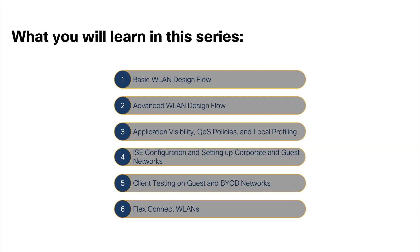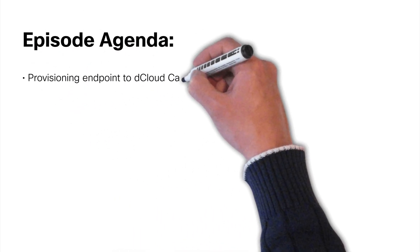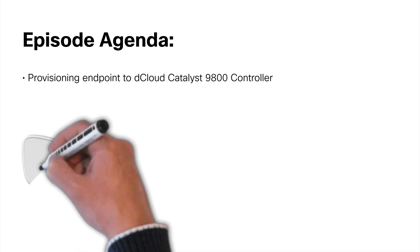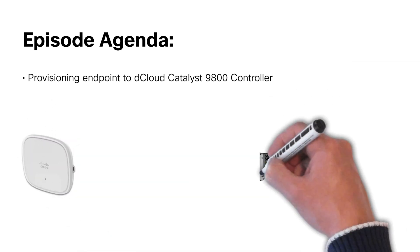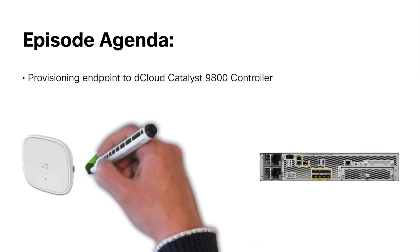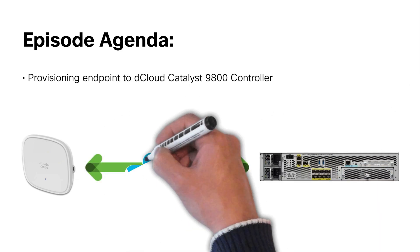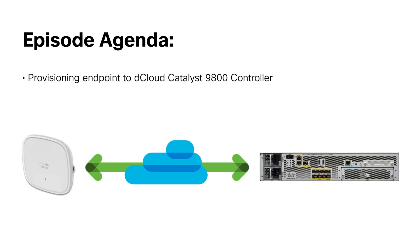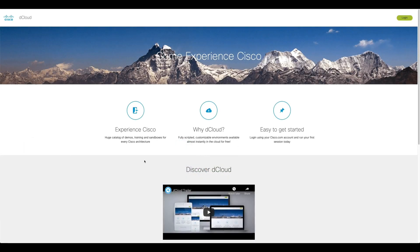If you're interested in any day zero configurations, please see the linked video in the description. In this episode, we'll be going over how to connect our AP to the dCloud 9800 WLC. If you've already connected your AP to the dCloud WLC or are using your own, please skip to Episode 2 of this series where we'll create WLANs using the basic WLAN design workflow.